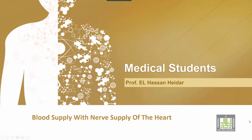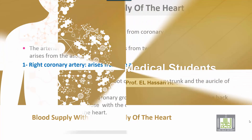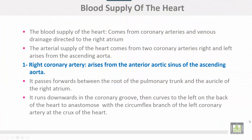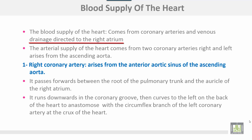Blood supply of the heart. The blood supply of the heart comes from coronary arteries, and venous drainage is directed to the right atrium.